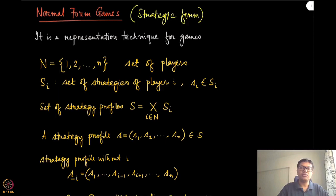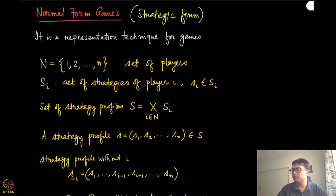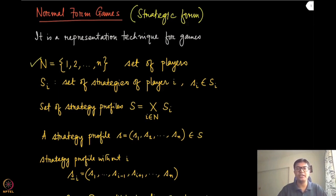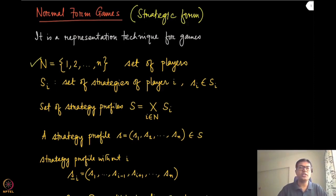Let's say we have a bunch of players, which we are going to denote by the set N. This set N enumerates all the identities of these players, and for simplicity we use the numbers 1 to n to denote their identities. We will typically denote N as the set of players. Each player i has a set of possible strategies, denoted by capital S_i, and one specific strategy in that set is denoted by lowercase s_i.